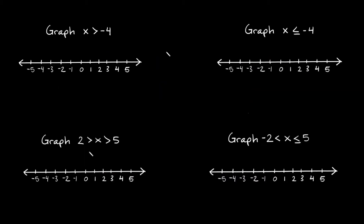Now let's try it with some negative numbers. This example says graph x is greater than negative 4. Here I have just a greater than symbol, so I'm going to use an open circle at negative 4. And since x is bigger than negative 4, all the numbers that are bigger than negative 4 are in this direction — towards positive infinity. In interval notation, negative 4 is on the left and positive infinity is on the right. Parentheses always go next to the infinity symbol, and since we have an open circle at negative 4, we use a parenthesis there too. So the answer is (-4, ∞).